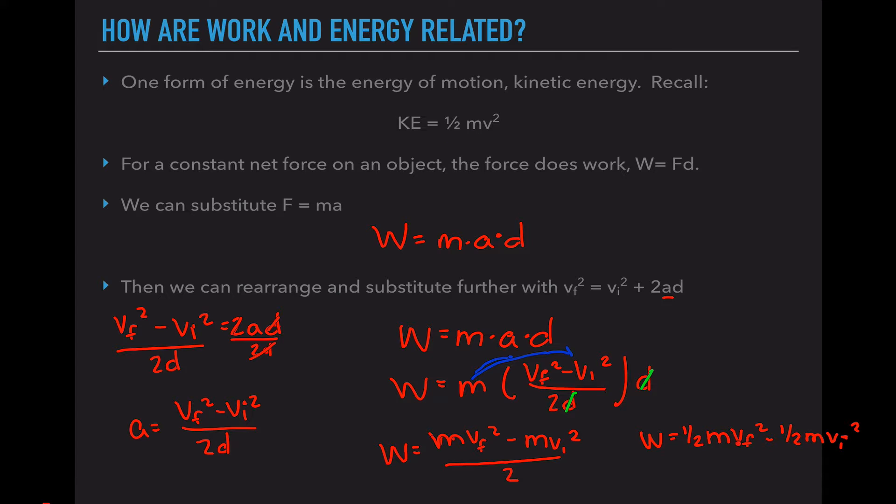Now we're at W = 1/2 mvf² minus 1/2 mvi². Look, this looks just like the kinetic energy equation. The only difference is I have a final and an initial. So I can rewrite this as work equals the change in kinetic energy, because it's my final kinetic energy minus my initial kinetic energy. That's how these two ideas are related. If we apply work, our kinetic energy changes. This is the main equation you want to make sure you have starred or highlighted on your page.